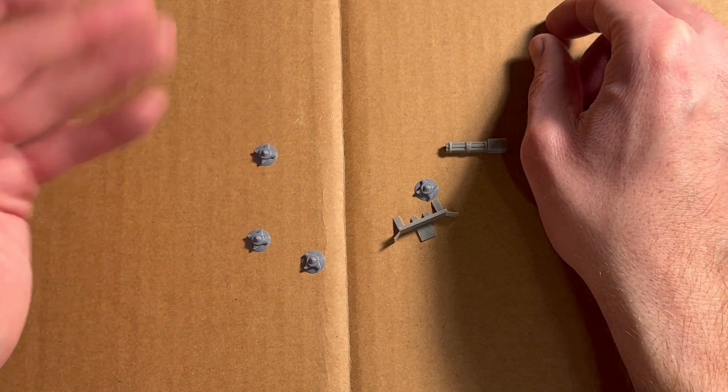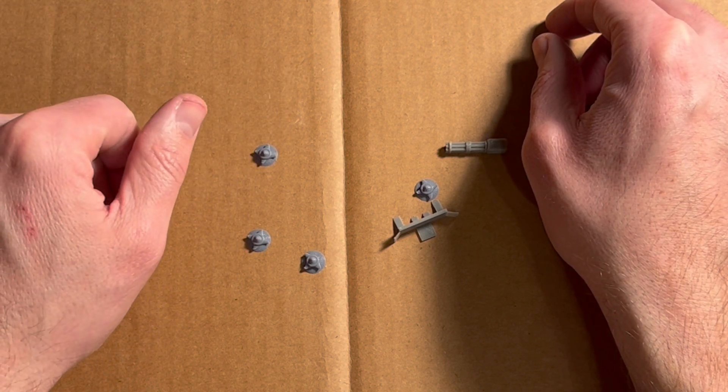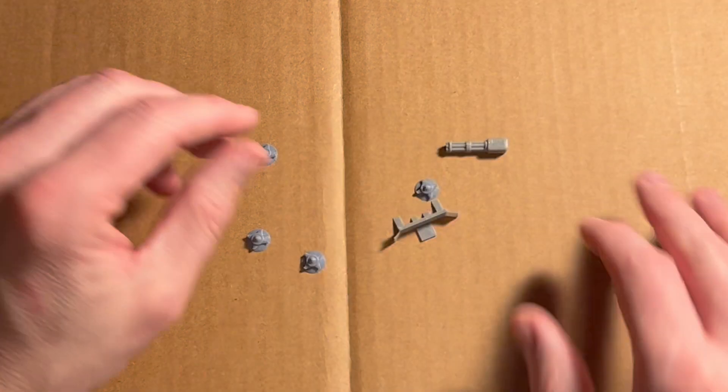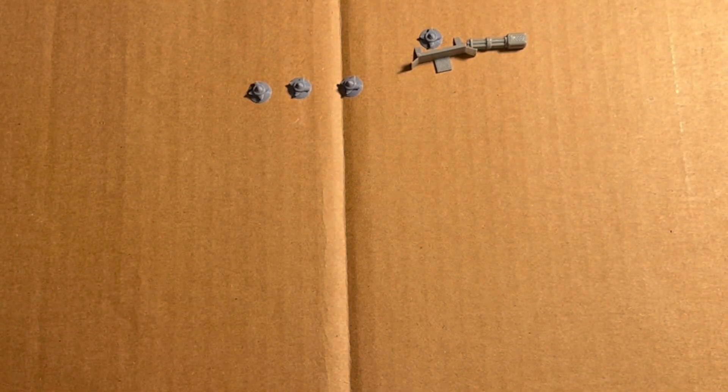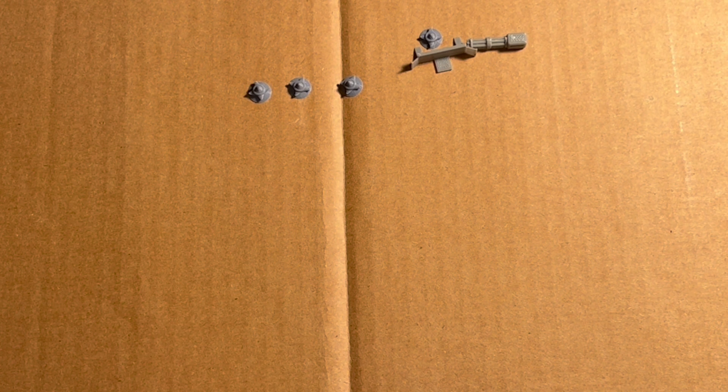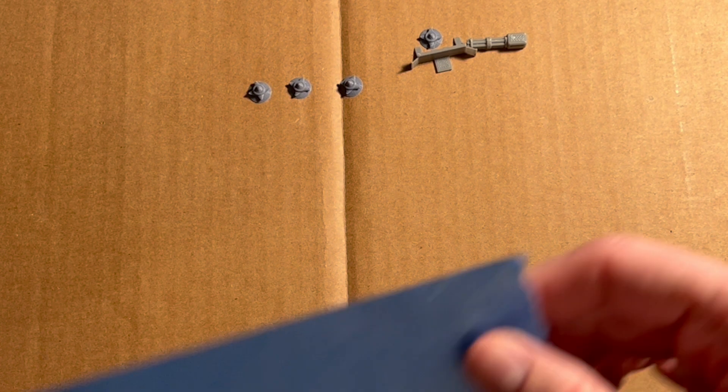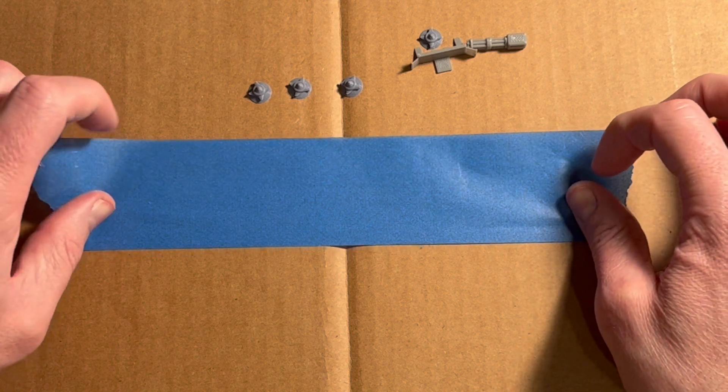Then the last thing you want is the area that you've primed to be face down on your drying surface, and then you have to try to flip it over, hopefully without messing up the primer too much. It's kind of a nightmare. So here's my quick hobby tip for you: painter's tape.